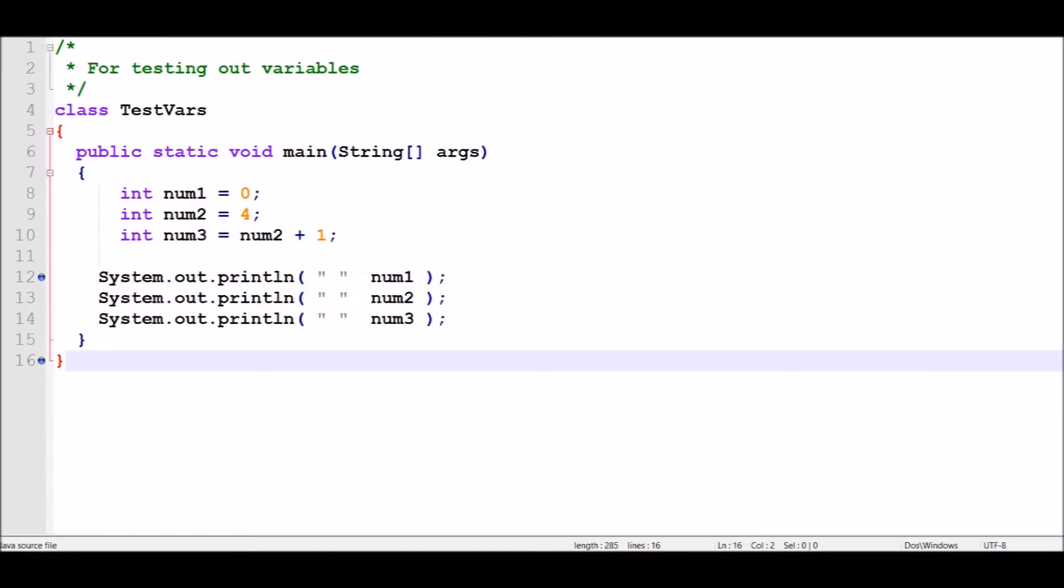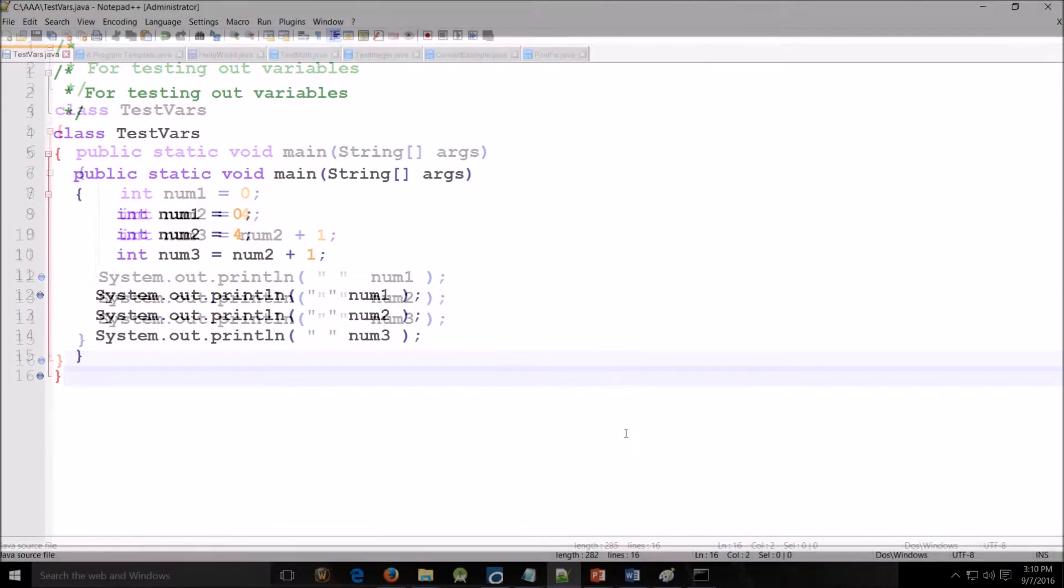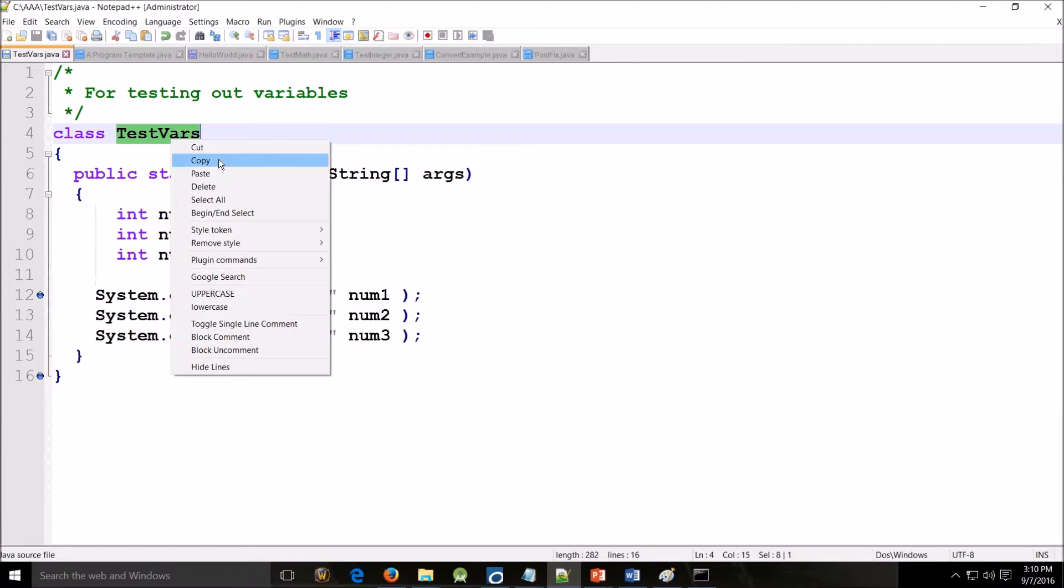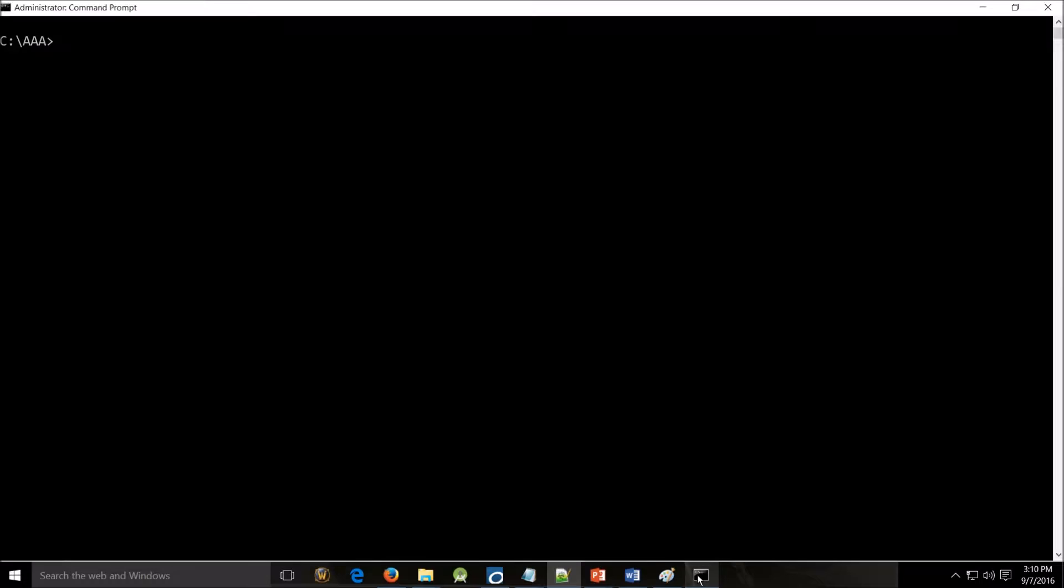I've created this sample program. You can find all these sample programs on my website. I've designed it so that number one equals zero, number two equals four, and number three is an expression that fits with this particular assigned variable which is an integer. Create and save the file. I would suggest that you copy the name of the class because if you can copy and paste into command prompt things go a lot faster. Now let me compile and print this out and see what happens.